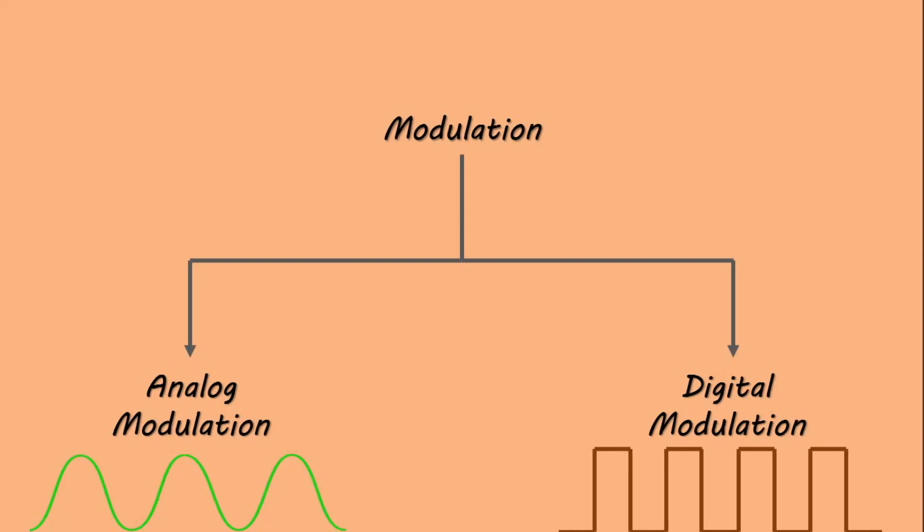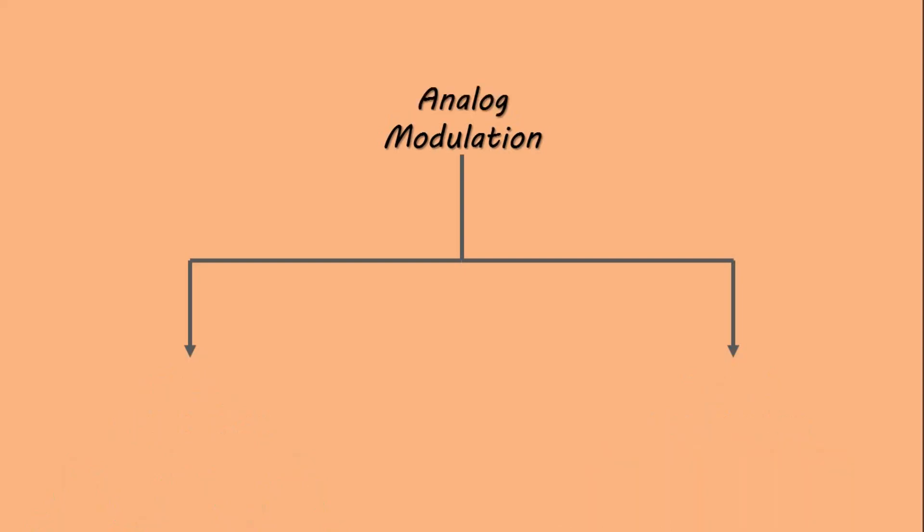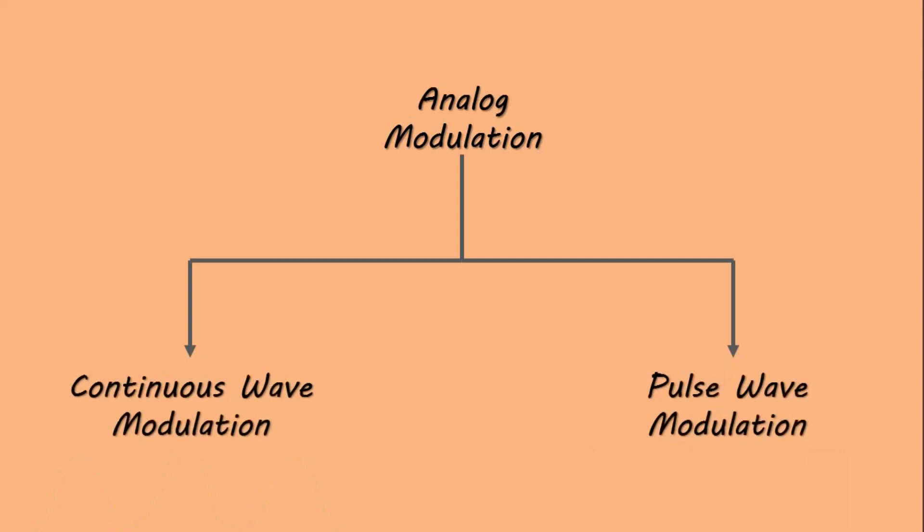Analog modulation is further classified into two categories depending on the carrier signal. If the carrier signal is a continuous wave signal like a sine or cosine wave, then it is known as continuous wave modulation. Similarly, when the carrier signal is a continuous pulse of finite frequency, then it is known as pulse wave modulation or pulse modulation.